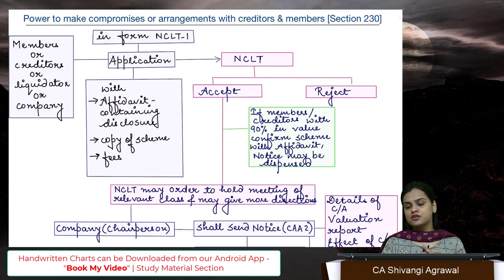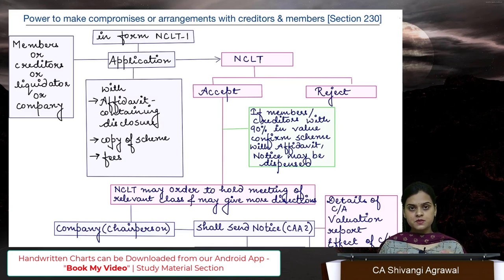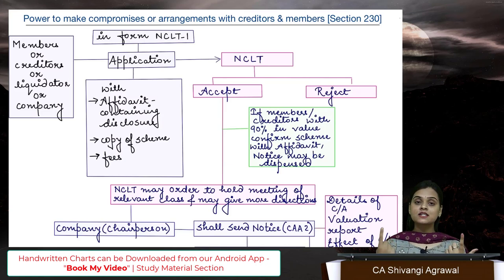Amalgamation could be in the nature of merger or in the nature of purchase. In the nature of merger, if it satisfies all the criteria; if it doesn't satisfy all the criteria, then it's in the nature of purchase. The Act does not recognize a difference between these and has not stated different provisions for amalgamation in nature of merger versus purchase versus demerger. We have section 230 for compromise and arrangement, and section 232 for merger, amalgamation and demerger.